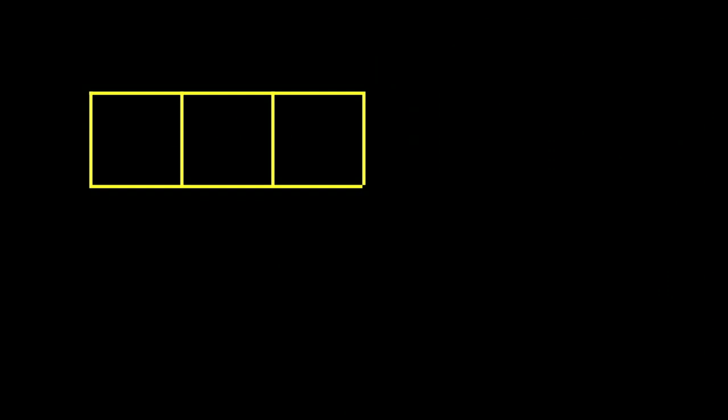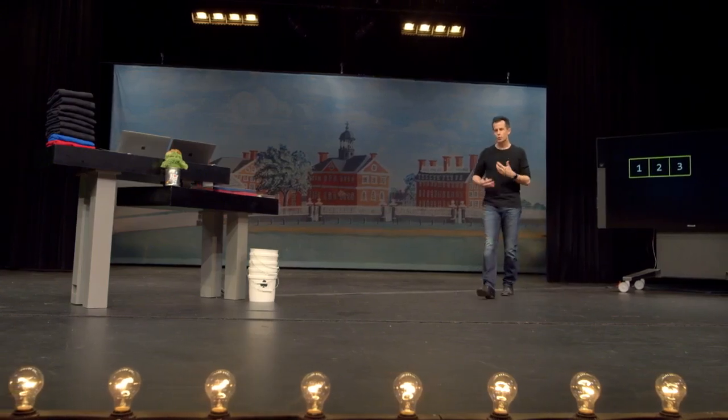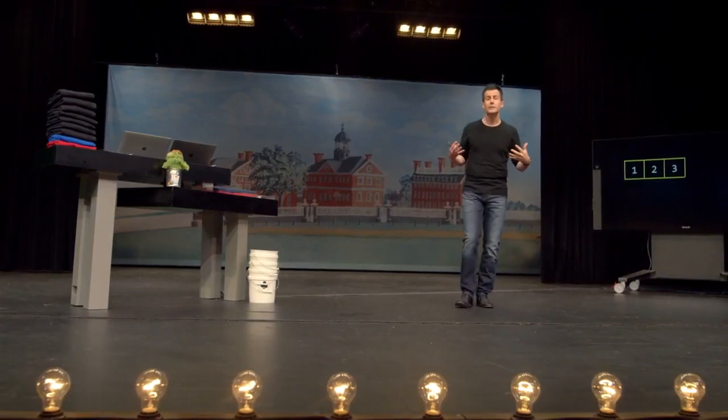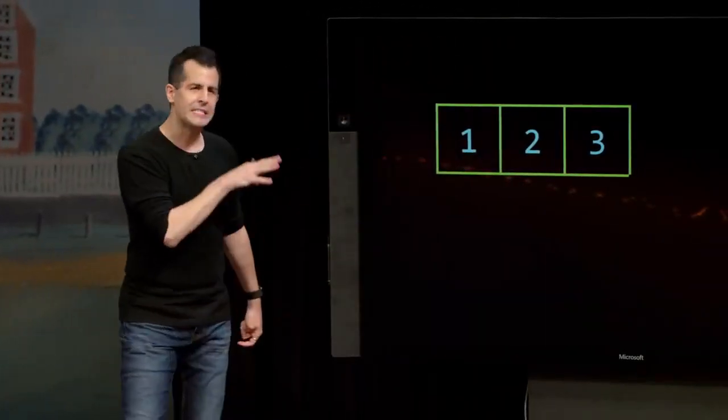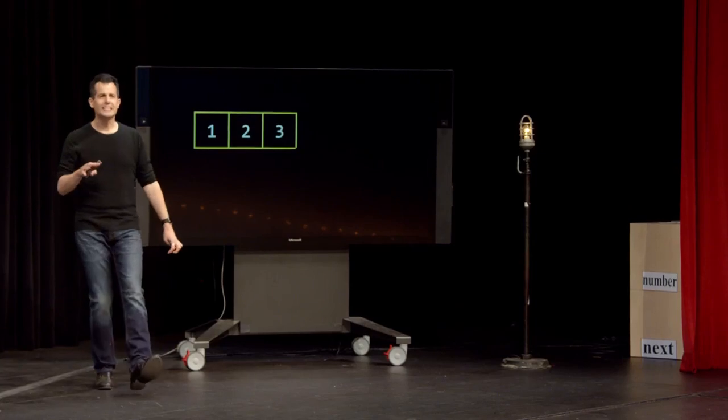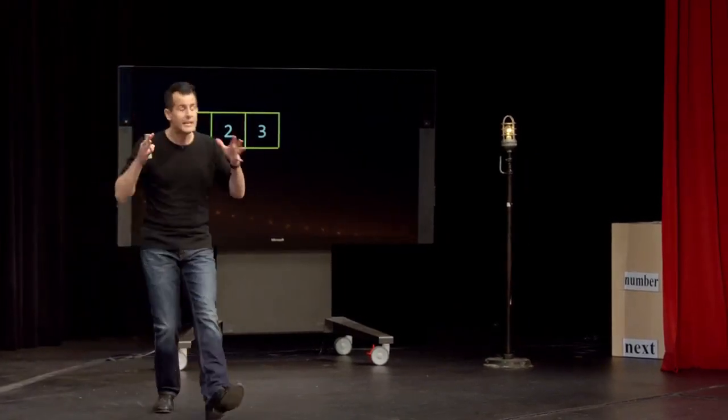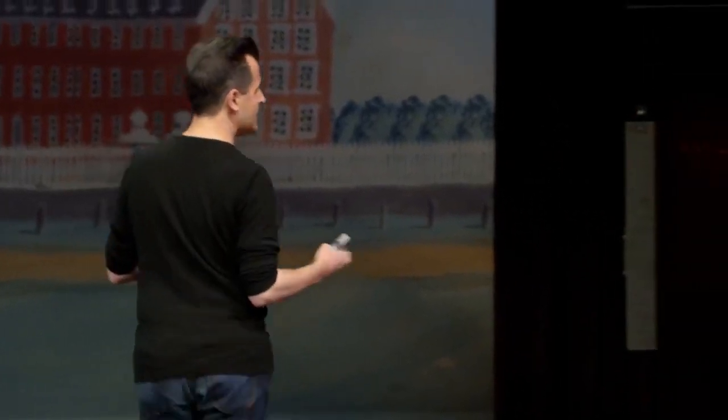Suppose you want to add another number to this array, but you've only had the forethought to create an array of size three. The catch with arrays in C is that they're not really easily resizable. You have to decide in advance how big the array is going to be. So if you change your mind later, or your program needs to store more values, you're in a bind.